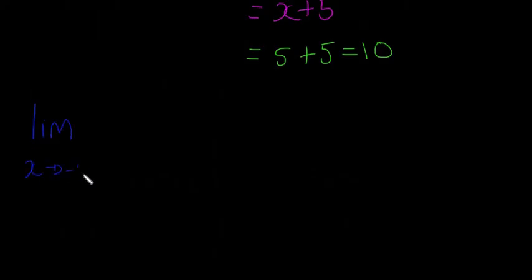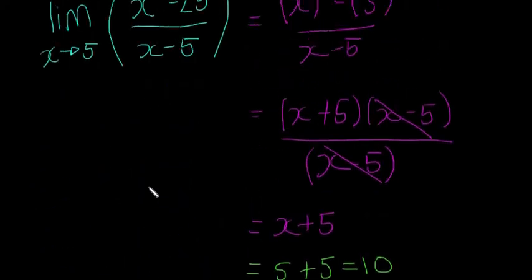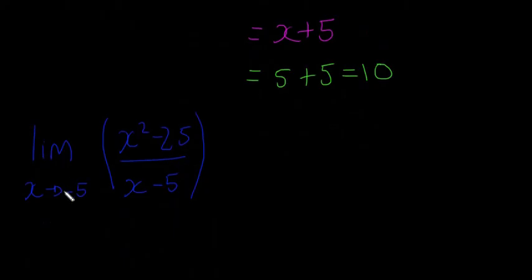Look at an example when that happens. If you have the limit as x approaches minus 5 of x squared minus 25 divided by x minus 5, this looks really similar to the question we had up here except this one is as x approaches 5, this is as x approaches minus 5.